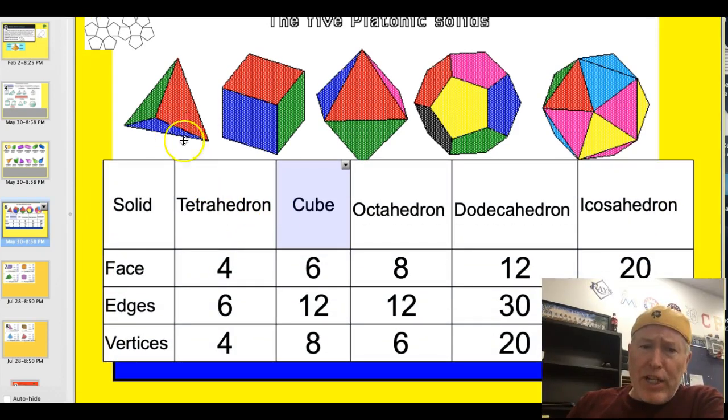So here's some other stuff about them. Here's the tetrahedron right here. Four faces, six edges, four vertices. Here's the cube. Sometimes it's called a cuboid. That's an old term, but it's just a cube. Six faces, 12 and eight. You know the edges and the vertices on this one. Here's the octahedron. We already had gone over. Eight faces, 12 edges, six vertices.